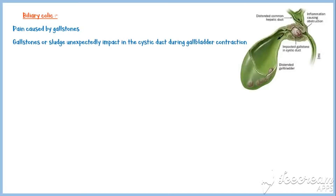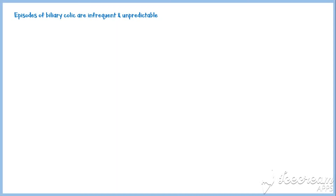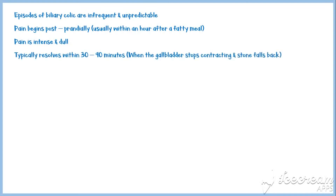Biliary colic is the term used to describe the pain caused by gallstones. This pain occurs when gallstones or sludge unexpectedly impact in the cystic duct during gallbladder contraction, increasing gallbladder wall tension. Pain is usually felt in the right upper quadrant and epigastric region, and may radiate to the tip of the right scapula, known as the Collins sign. Episodes of biliary colic are infrequent and unpredictable. The pain begins postprandially, usually within an hour after a fatty meal, and is often described as intense and dull. An episode typically resolves within 30 to 90 minutes.